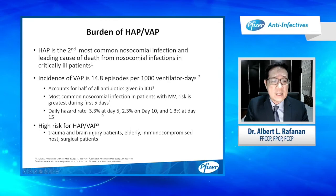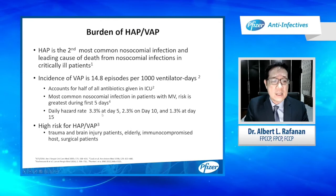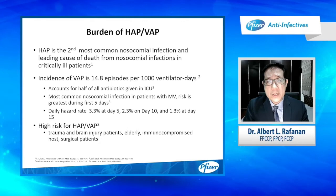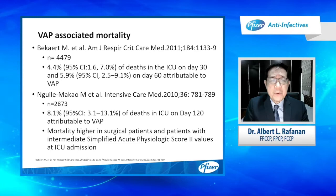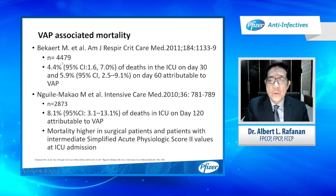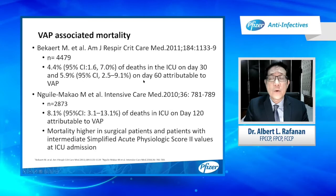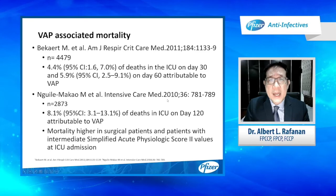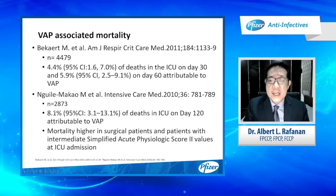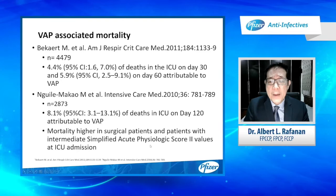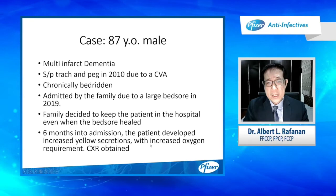The longer you keep the patient intubated, the higher the chance of developing ventilator-associated pneumonia. High-risk patients for HAP or VAP include those with trauma, brain injury, the elderly, immunocompromised hosts, or patients undergoing surgery. VAP has an increased mortality. In a paper by Beckert published in the American Journal of Critical Care Medicine in 2011, looking at 4,479 patients, 4.4% of deaths in the ICU on day 30 and 5.9% on day 60 were attributable to VAP. Nigeli Macau et al., published in Intensive Care Medicine in 2010, found that in 2,873 patients, 8.1% of deaths on day 120 were attributable to VAP. Patients with surgery or higher Apache 2 scores on ICU admission had a higher risk of developing VAP.